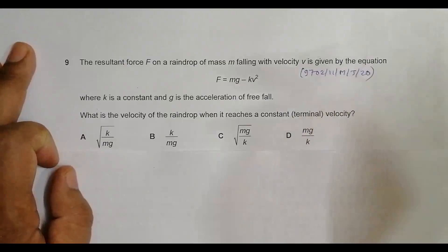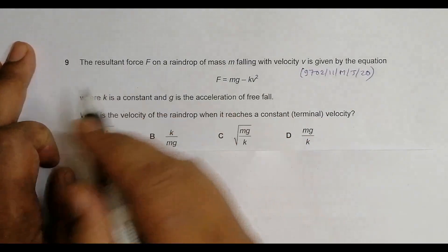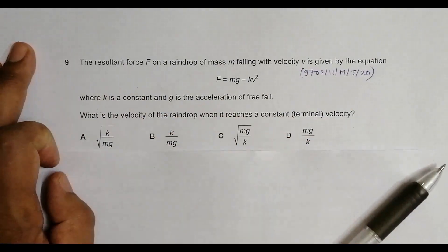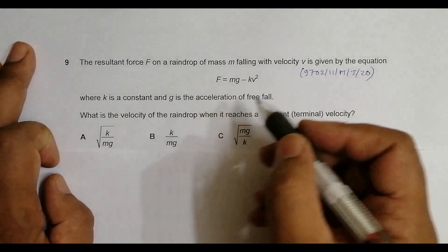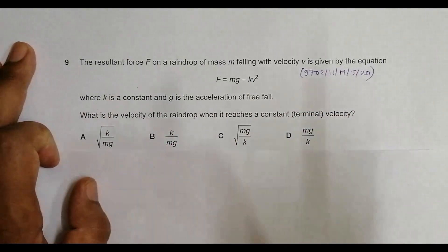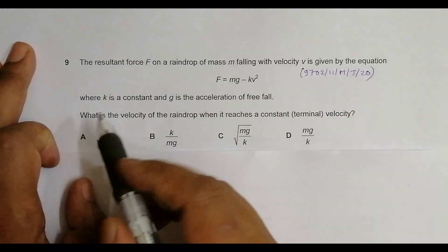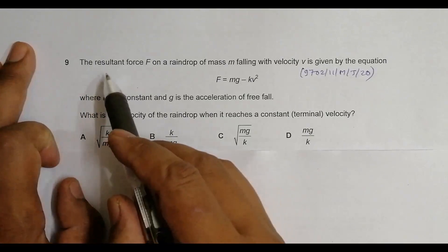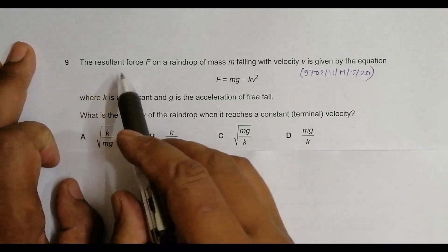Hello folks, today it is 2020 May June paper 1 1 and the question number is 9. It is concerned with the chapter forces, or even kinematics, because we're talking about opposing forces here and its relationship and effect on velocity or acceleration.